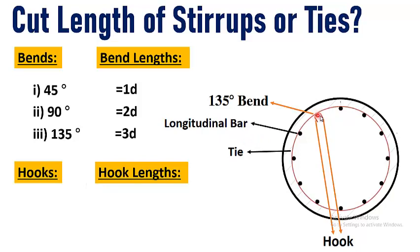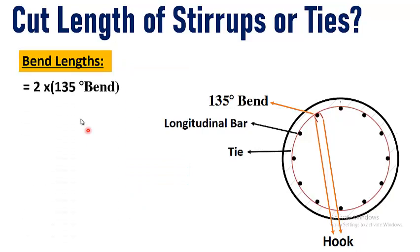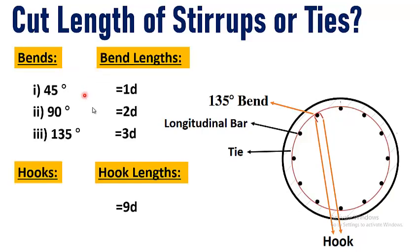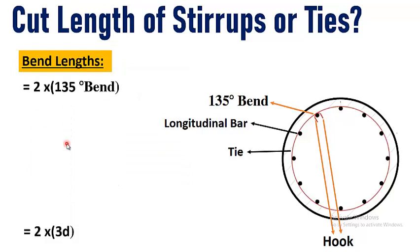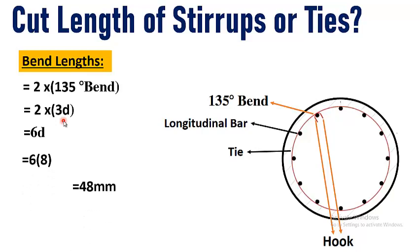In a circular tie there are two hooks and only one type of bend, which is the 135-degree bend. The hook length is normally taken as 9 times the diameter of the stirrup bar. To calculate the total bend deduction: 2 multiplied by the 135-degree bend length, which is 3 times the bar diameter, giving 6d. With a bar diameter of 8 millimeters, the total bend deduction equals 6 × 8 = 48 millimeters.